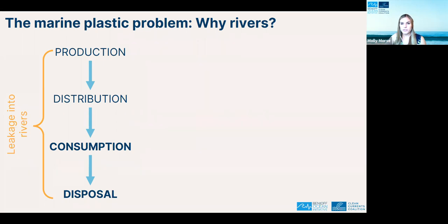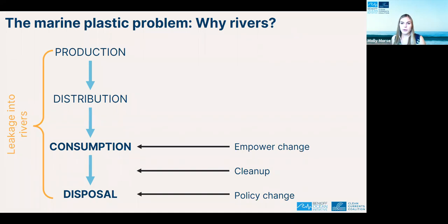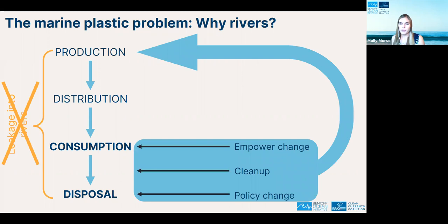As the Benioff Ocean Initiative, we found that we could best slot in to implement interventions in this consumption-disposal phase: empowering change in consumption behaviors, cleaning up existing plastic waste in river systems, and through data collection and relationship building, influencing policy changes. The ultimate goal is to turn what is now largely a linear system into a circular one, where plastic that is used can then be repurposed or recycled as it is pulled out of the environment or properly disposed of, and taken back to the production phase.